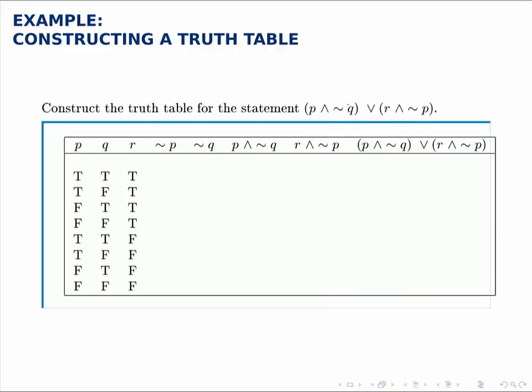But then we go to each of the statements in parentheses, P and not Q, so we include a column for that, and R and not P, we include a column for that. Then, the last operation is to take those two columns, those two things in parentheses, and stitch them together with OR, and so that's the final column.